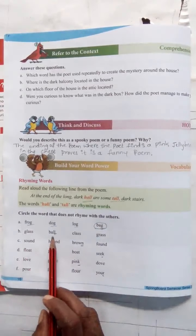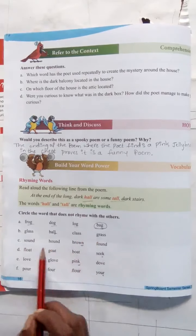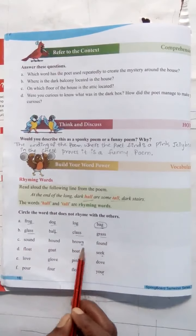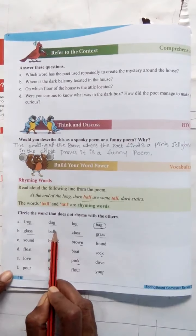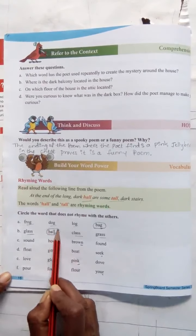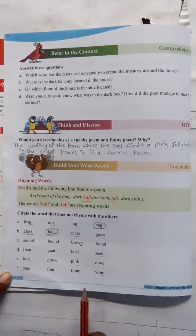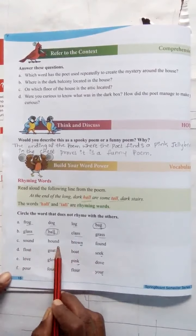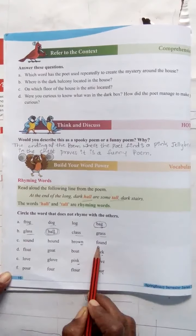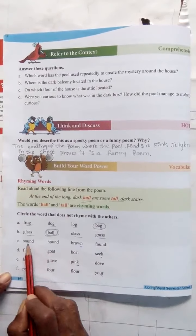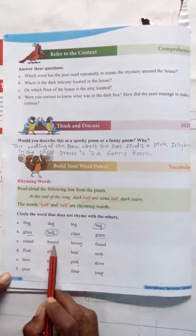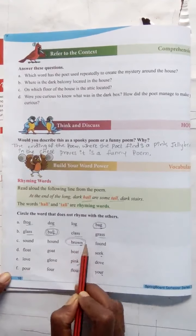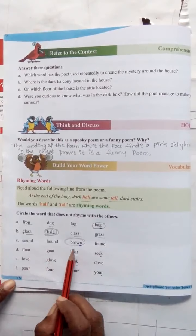B: glass, ball, glass, grass. They all end in '-ass' except 'ball' which ends in '-all' — so 'ball' is the odd word. C: sound, hound, brown, found. Sound, hound, found end in '-ound,' but 'brown' ends in '-own' — so circle 'brown.' D: float, goat, boat, seek — here three words rhyme, the last one 'seek' is different — circle it.